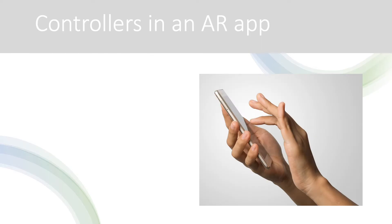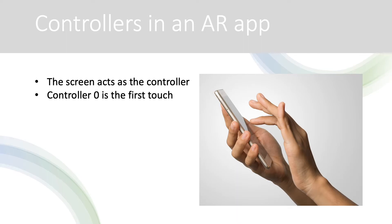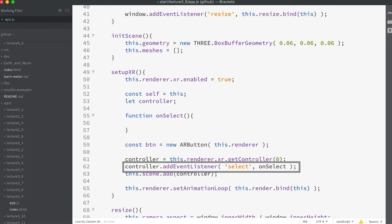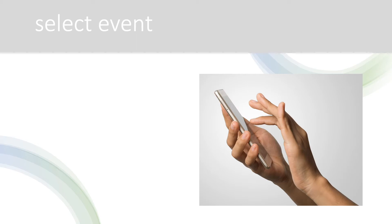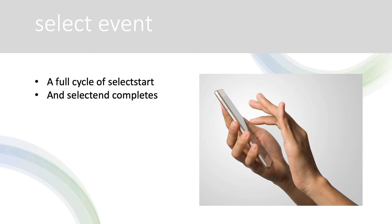You might be surprised to see a controller in an AR app. Most AR apps will be used on mobile phones, and the screen is used as the controller — so controller zero is the first touch. We add an event listener to the 'select' event. The select event occurs when a full cycle of 'selectstart' and 'selectend' completes.